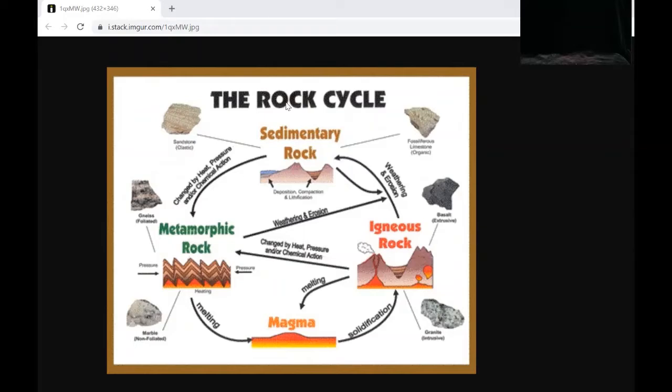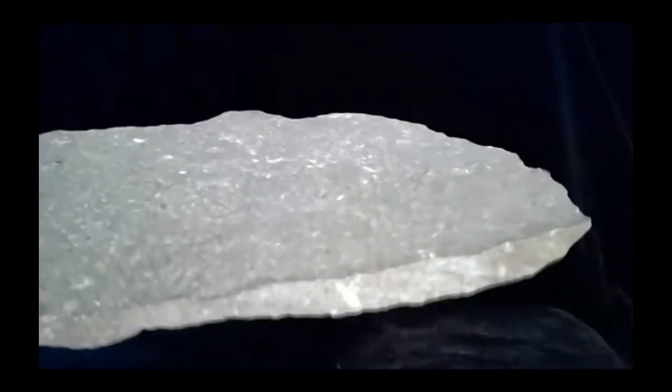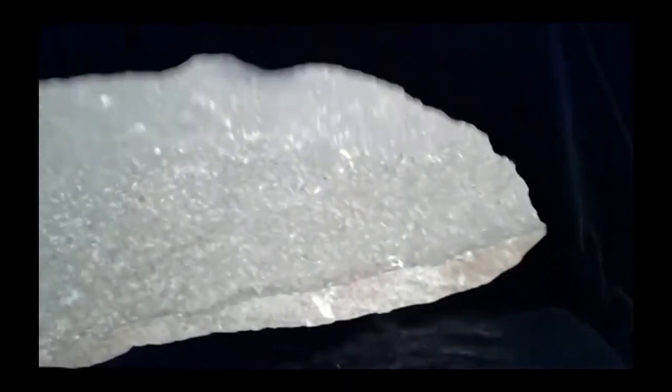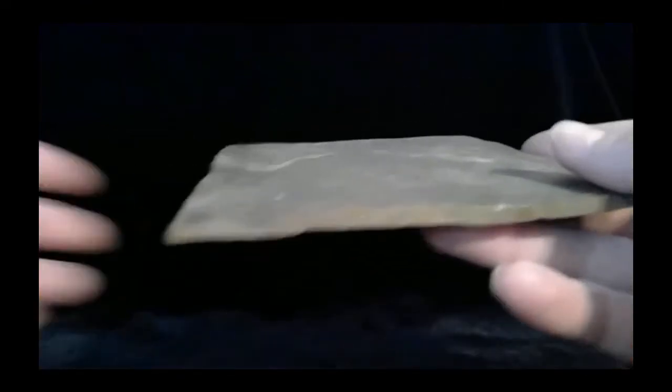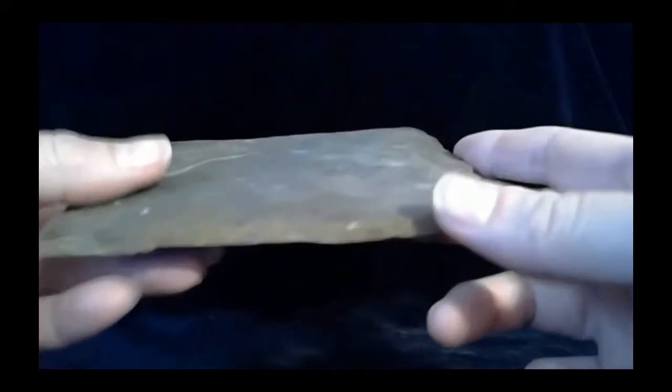I'm going to come out of this screen share and I'm going to bring up some metamorphic rocks. To start though, I want to go back to talking about our shale. Here's a piece of our shale. It's very flat. As it goes through metamorphosis, it turns into slate. That's a little bit of heat, a little bit of pressure changes it into slate.